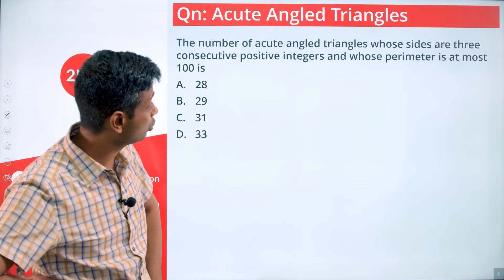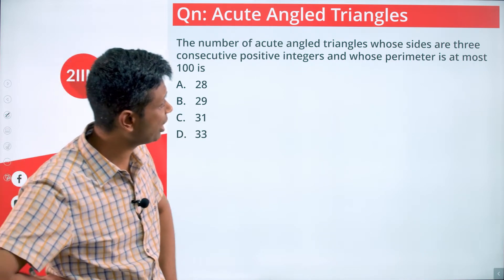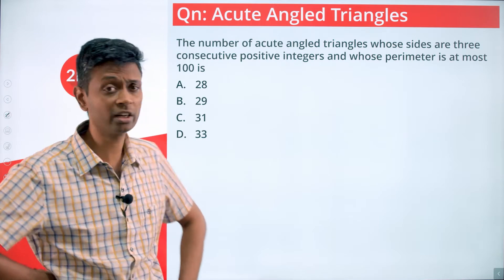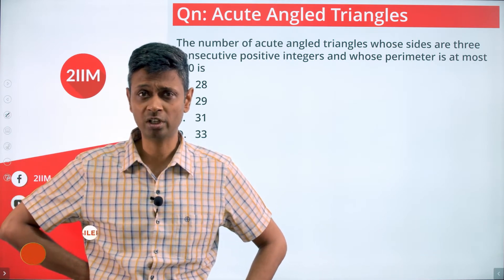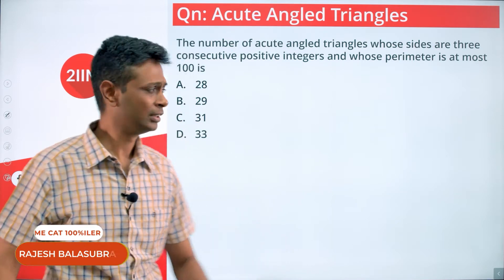The number of acute angle triangles whose sides are three consecutive positive integers and whose perimeter is at most 100 is - a beautiful question. Perimeter is at most 100, the sides are three consecutive positive integers. So a bunch of simple constraints here.